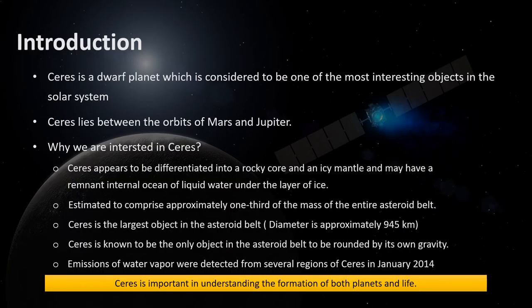Ceres is a dwarf planet which lies between the orbit of Mars and Jupiter and is considered to be one of the most interesting objects in the solar system. One main question we should ask is why we are interested in Ceres. Well, Ceres appears to be differentiated into a rocky core and an icy mantle and may have a remnant internal ocean of liquid water under the layer of ice. It is also estimated to comprise approximately one-third of the mass of the entire asteroid belt. Ceres is also known to be the only object in the asteroid belt to be rounded by its own gravity. In January 2014, emissions of water vapor were detected from several regions of Ceres, which makes us interested in knowing the core of the dwarf planet.